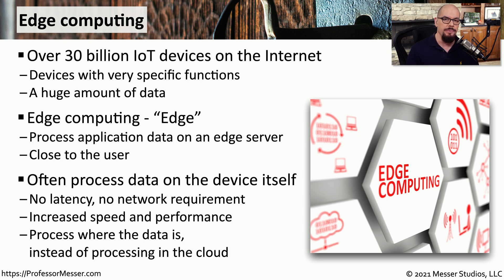We should also think about edge computing from a data perspective. All of those Internet of Things devices — your garage door opener, your washer and dryer, your climate control system — are all collecting data on your network. These devices use this data to make decisions about how they should operate. For example, a climate control system can look at the temperature in a room and determine if it should cool or heat the room based on what the current temperature might be. There is not a need to go out to the internet and process any data just to make those local decisions on the climate control device.